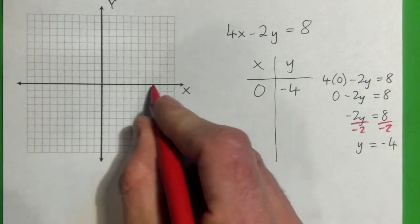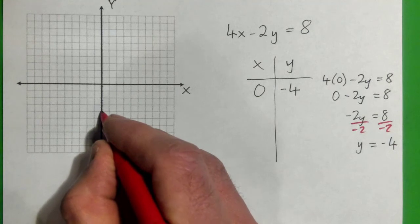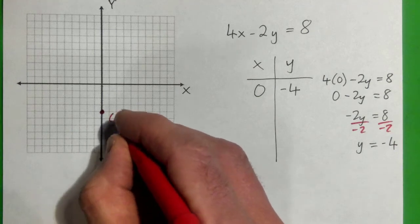So x is 0, is here, and y is negative 4 down here. That's the point there, 0, negative 4.